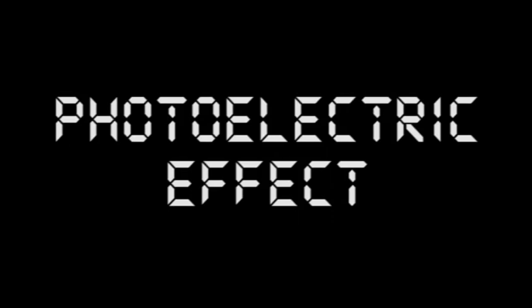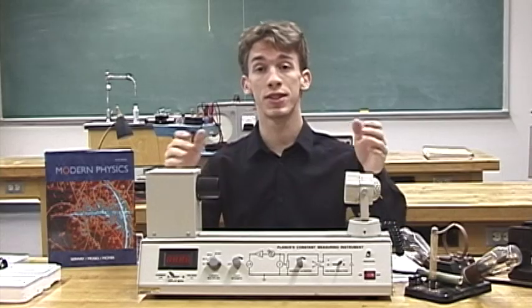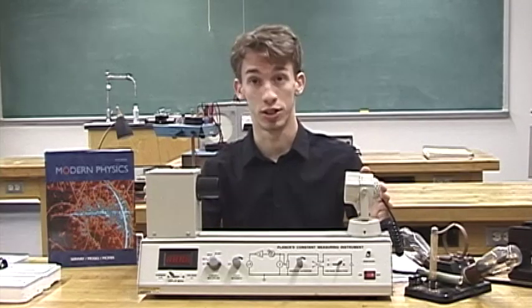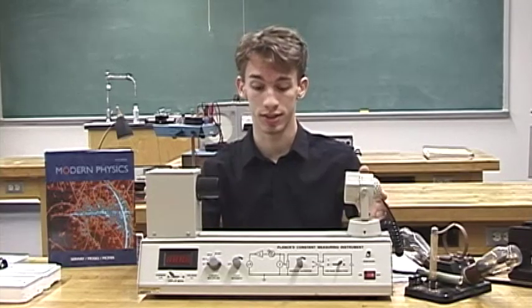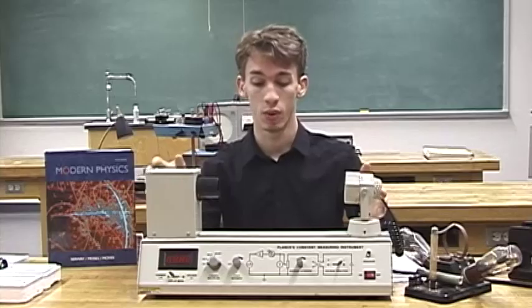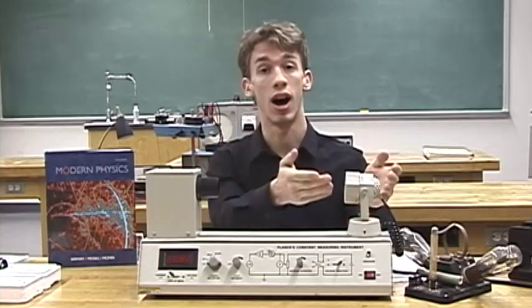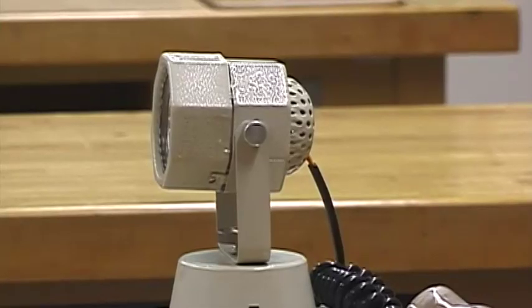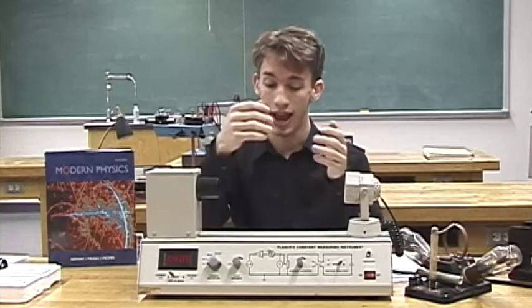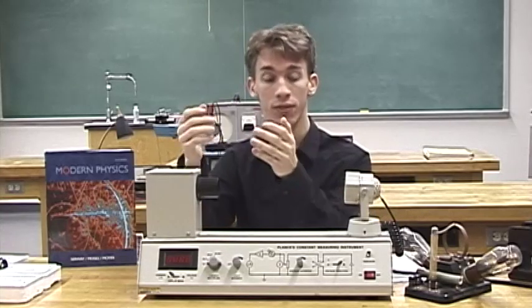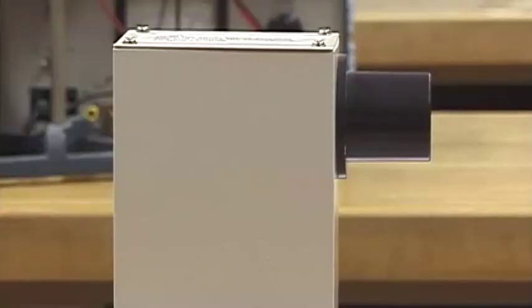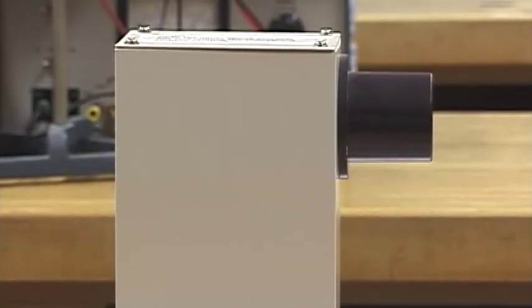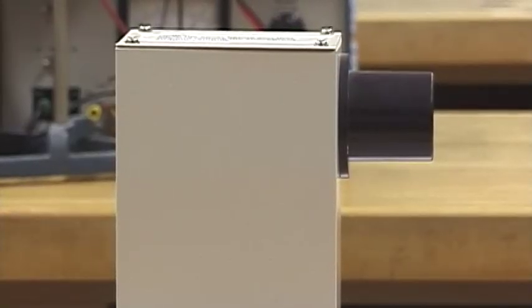Shhh, science is happening. Here we have set up a device to measure Planck's constant. We have a light source, and we have a photosensitive cell which will release electrons, creating a current when a light is shown on it.